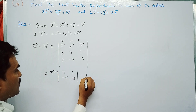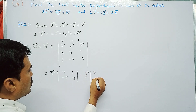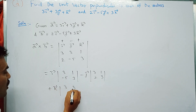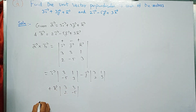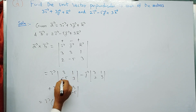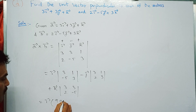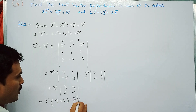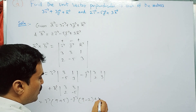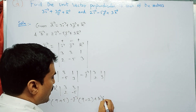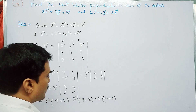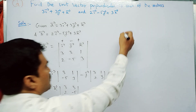Expanding: i-bar times (3×3 - 1×(-5)), minus j-bar times (3×3 - 1×2), plus k-bar times (3×(-5) - 3×2). This gives i-bar into (9 + 5), minus j-bar into (9 - 2), plus k-bar into (-15 - 6).